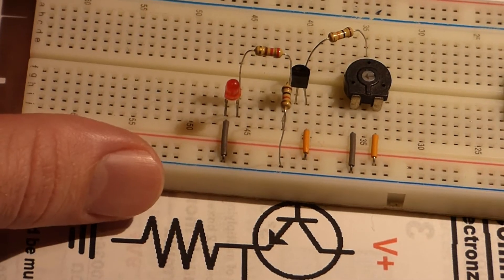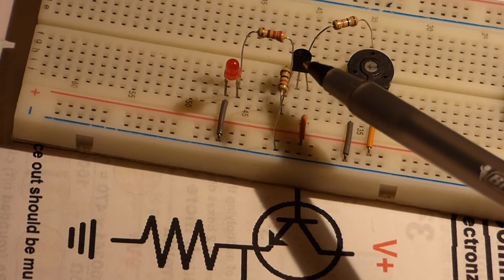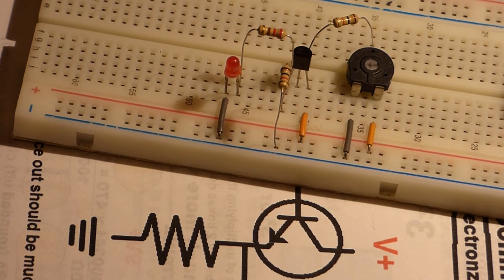So now for this demonstration we have an NPN transistor 2N3904 and it's wired up as a common collector or an emitter follower, whichever one you want to call it.